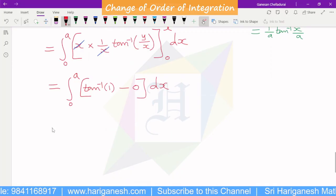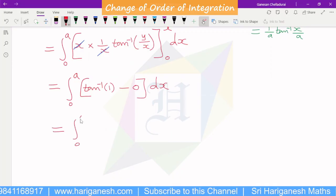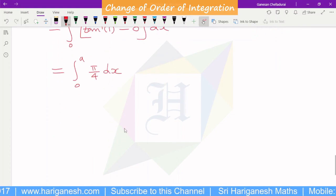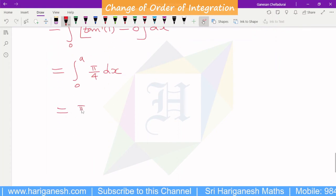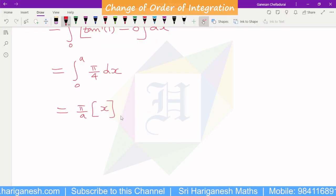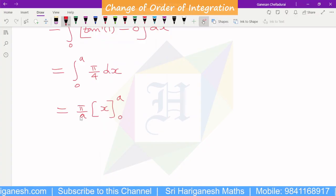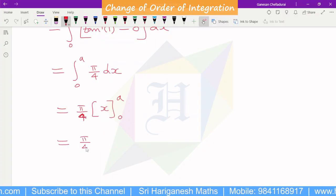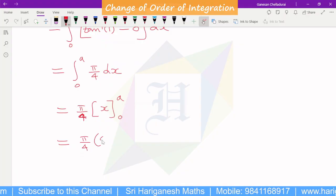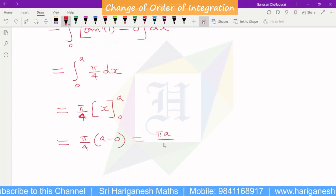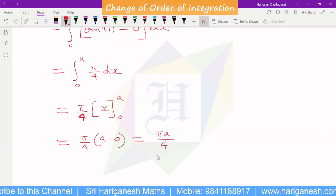Tan inverse of 1 value is pi by 4. Integral 0 to a, pi by 4 dx. Integration of dx is x, limit 0 to a. So pi by 4 into a minus 0. Final answer is pi a by 4. This is the answer.